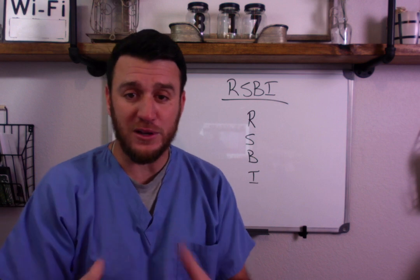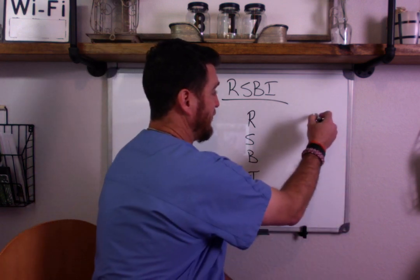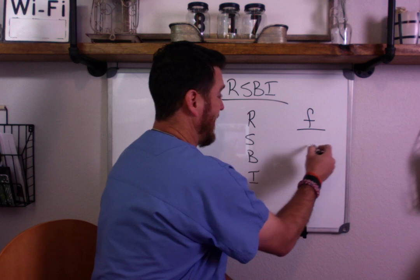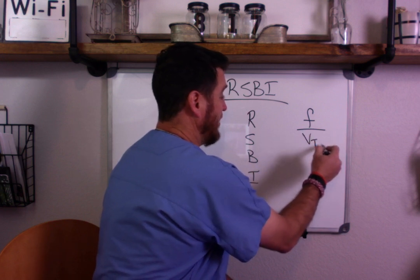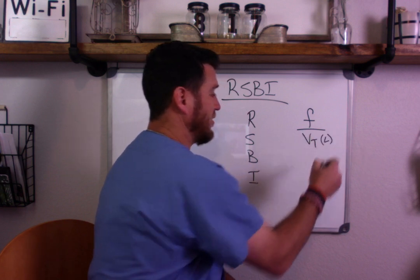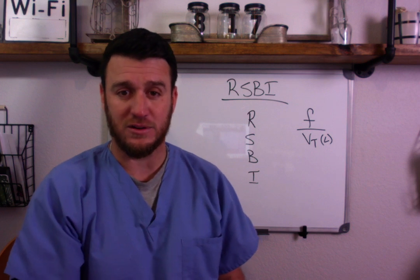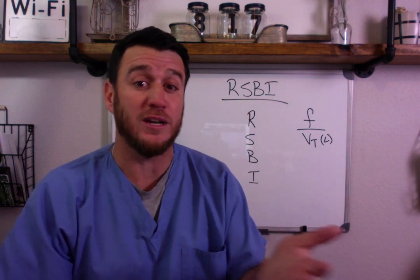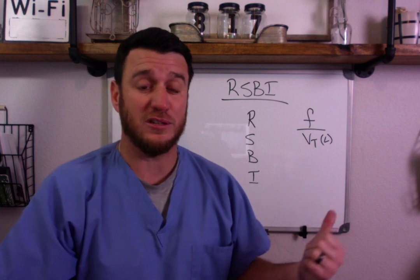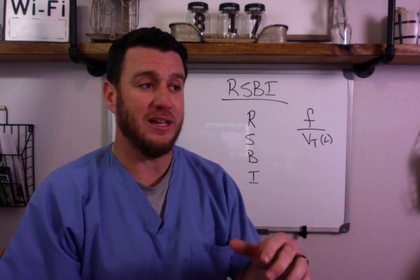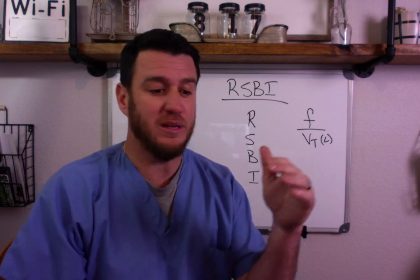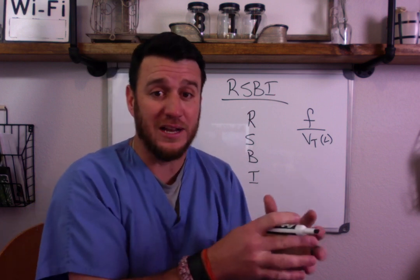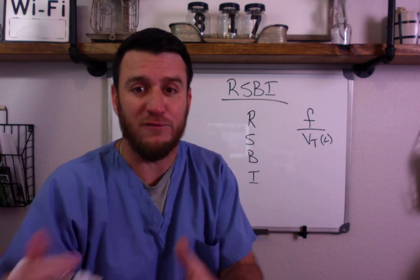RSBI stands for Rapid Shallow Breathing Index. The formula is that you take frequency and divide it by tidal volume, but you have to make sure your tidal volume is in liters. So if a patient has a tidal volume of 400 mL, when you do this formula you put it in liters — 0.4 liters. 400 milliliters is the same as 0.4 liters.